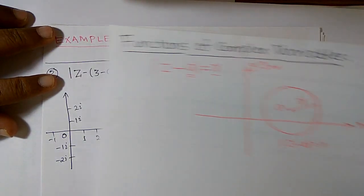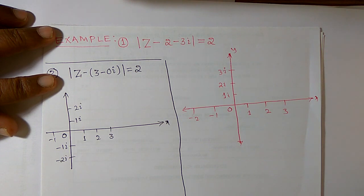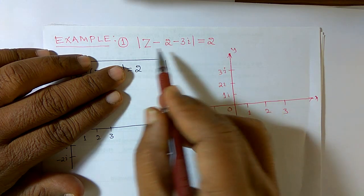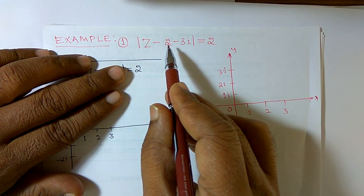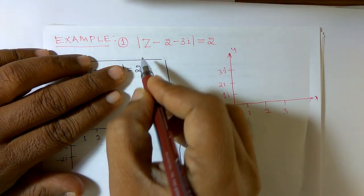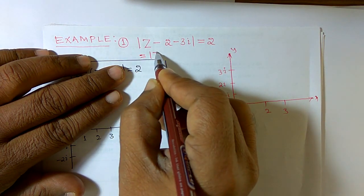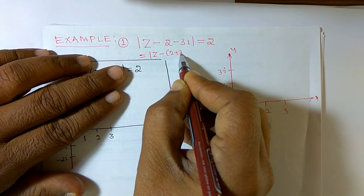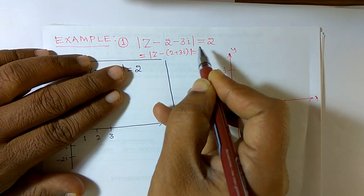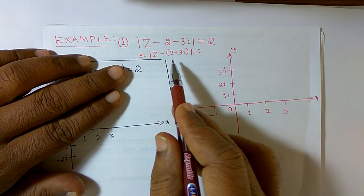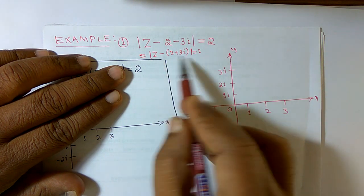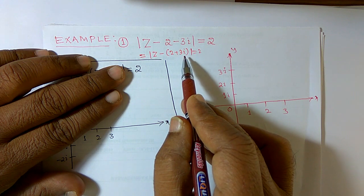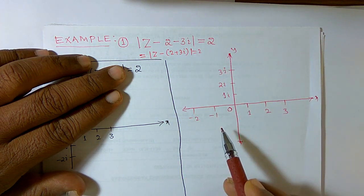Now I want to consider some particular examples. For example, if the given equation is mod of z minus 2 minus 3i is equal to 2, the same equation can be written as mod of z minus (2 plus 3i) is equal to 2. Comparing with mod of z minus a equals r, we get a equals 2 plus 3i and r equals 2.